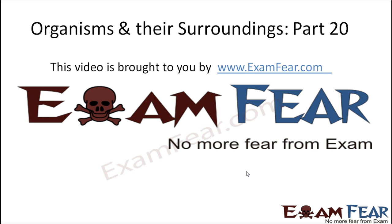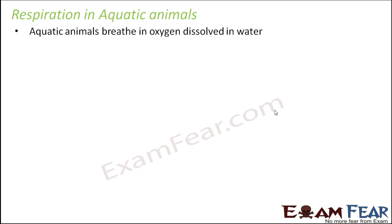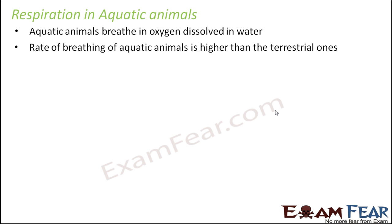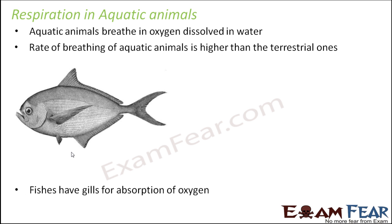This video on organisms and their surroundings is brought to you by examfear.com. Aquatic animals like fishes live in water, so for respiration they need oxygen that is dissolved in water. For that purpose they have specialized structures — in the case of fishes, we have gills, which have the ability to absorb oxygen dissolved in water.